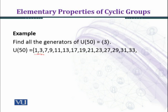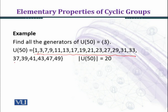In this way we have 7, 9, 11, 13, 17, 19, 21, 23, 27, 29, 31, 33, 37, 39, 41, 43, 47, 49. These are 20 elements in the group U(50) which are the units, all the units of 50, and 1 is the multiplicative identity here.